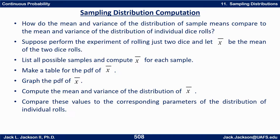To explore this, we're going to look at a simpler example first. What if the sample size is just 2? What if we roll just two dice and let x-bar be the mean of the two dice rolls? List all the possible samples and compute x-bar for each. Make a table of the PDF for x-bar and graph it. Then compute the mean and variance of the distribution of x-bar and compare those values to the corresponding parameters for the distribution of individual dice rolls. Press pause and try this yourself.